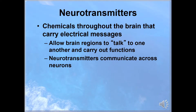Neurotransmitters are chemicals in the brain that transmit electrical messages. They allow brain regions to talk to one another and to carry out a variety of functions. And although we don't have an exact causal relationship, there is mounting evidence that neurotransmitters play a significant role in the various abnormal behaviors that we'll talk about throughout this class. So first, let's talk a little bit about how neurons communicate and the role of neurotransmitters, and then we'll come back and talk about potential problems with this process.